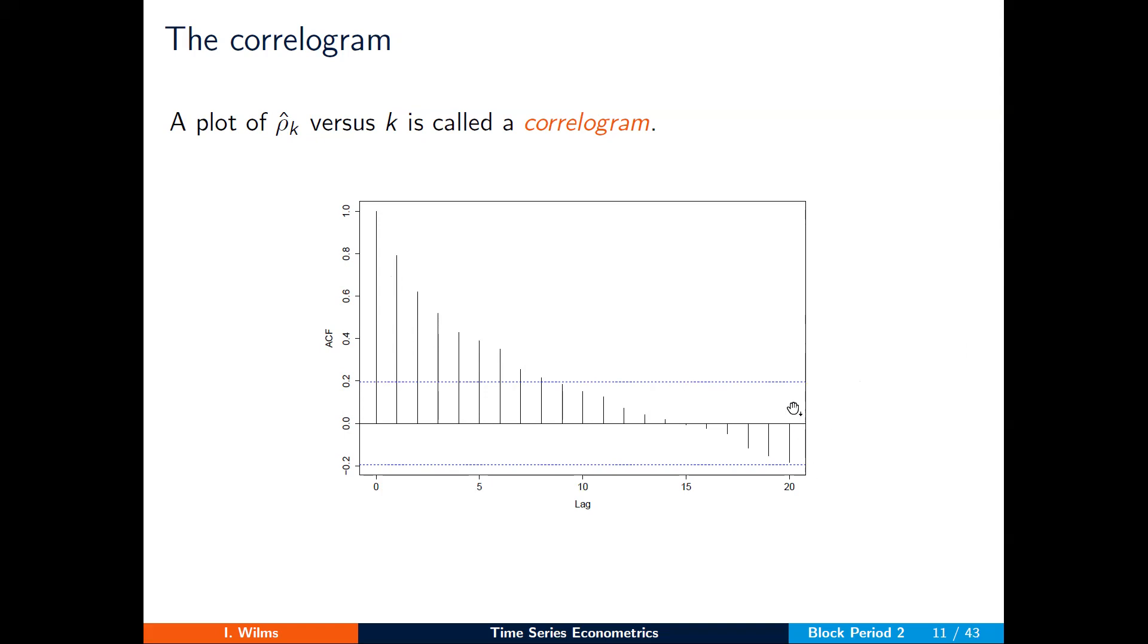On the correlogram, you will also see two horizontal blue lines. These correspond to the critical values of the null hypothesis that the autocorrelation at lag k, at each lag k, is equal to zero. These horizontal blue lines are the critical values of the test statistic for a default significance level of 5%.